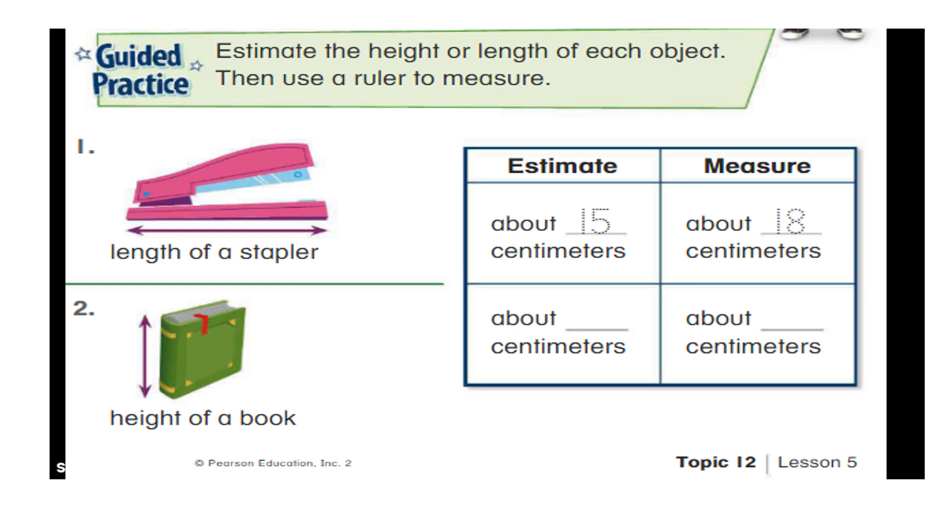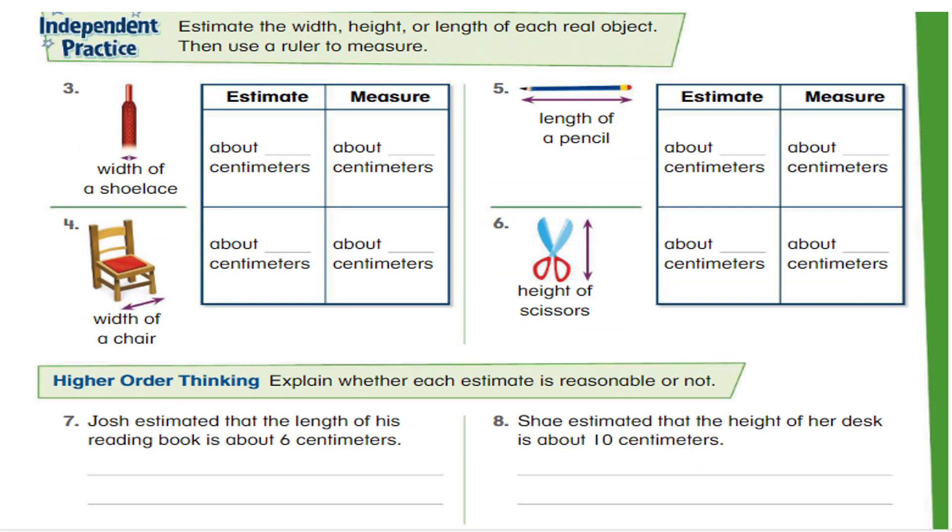And then same thing you will do with this book. First, you will see how tall is it and you will guess or estimate and then you will use your ruler and look for the nearest centimeter. How tall is your ruler? Likewise, you have to finish this page also. Using your ruler, measure the height and the width or the height and the length of different objects. Write here the estimates and write here after using the ruler.